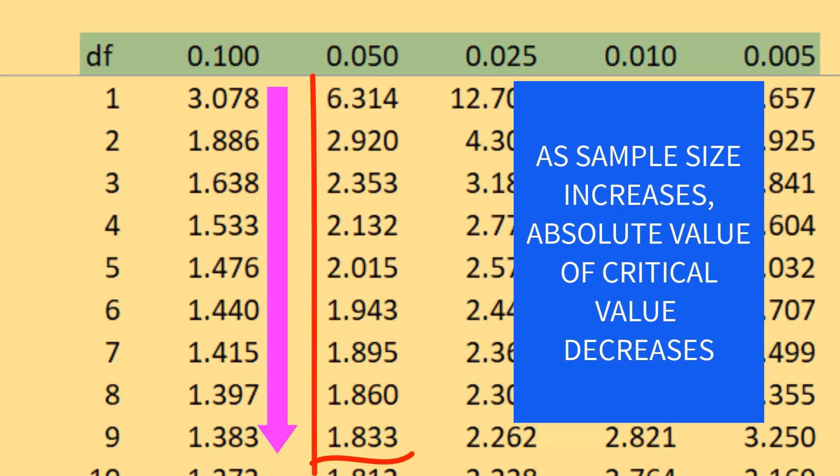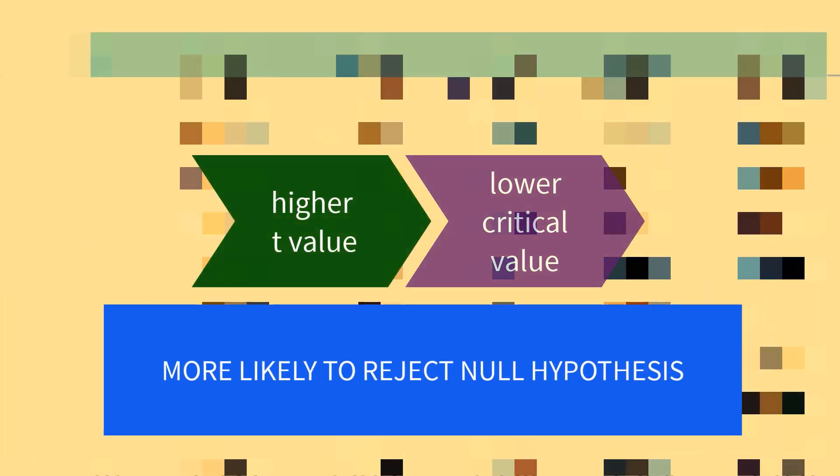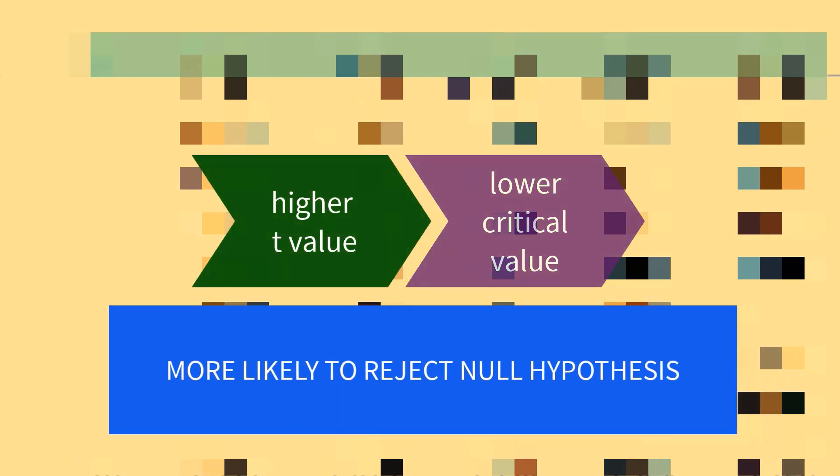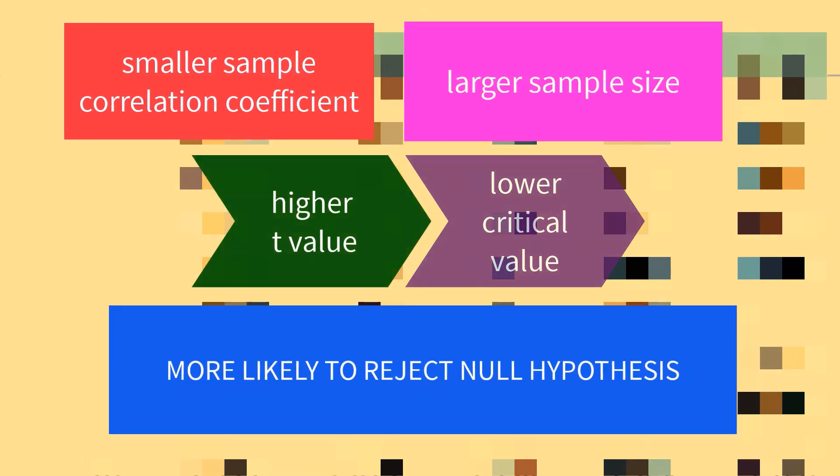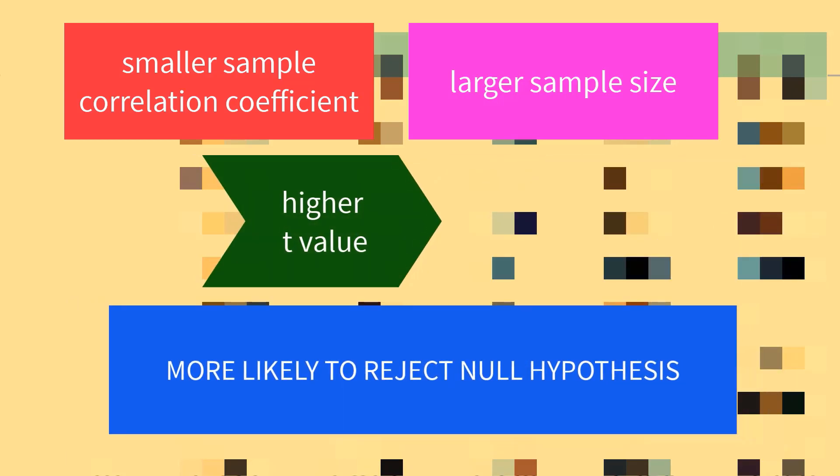as sample size n increases, the absolute value of the critical value decreases, making it more likely to reject the null hypothesis. We only need a small sample correlation coefficient as sample size increases in order to reject the null hypothesis, assuming they are in the same population.